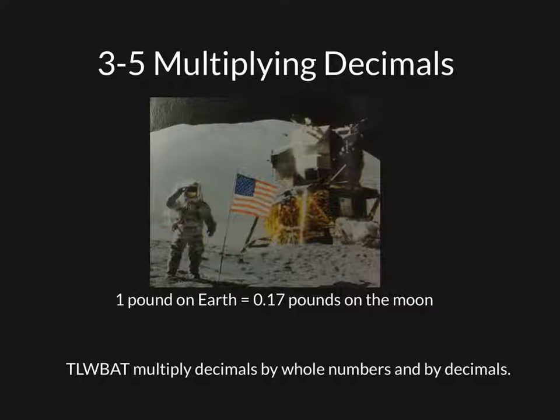Hello and welcome to 3-5. Today we're going to be talking about multiplying decimals. Here we have a little information for you. It says 1 pound on earth equals 0.17 pounds on the moon. So you can figure out how many pounds you would weigh on the moon if you know how to multiply decimals.